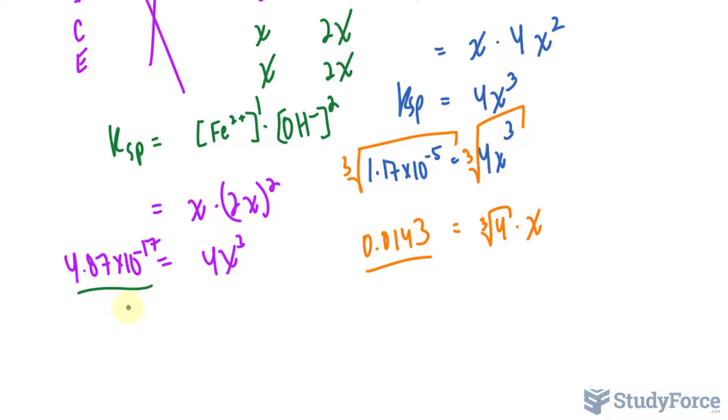I'll divide both sides by 4. That gets rid of this 4. And then I'll cube root both sides. So let's go ahead and do that.